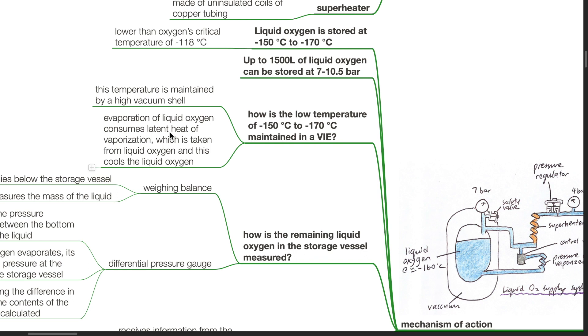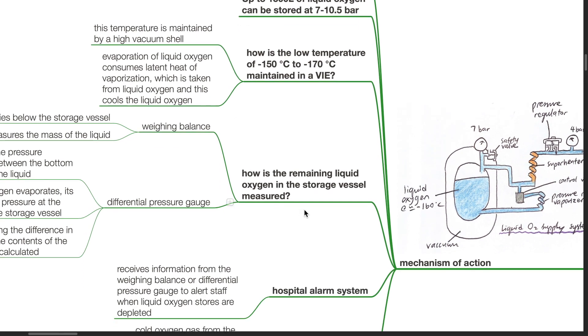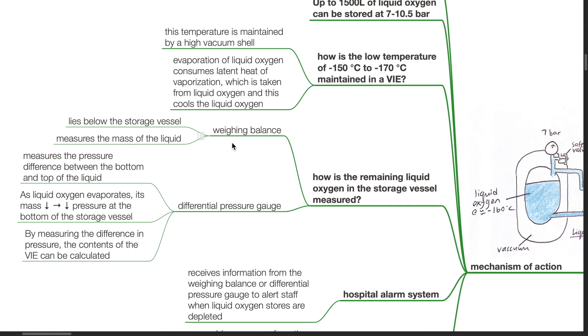How is the remaining liquid oxygen in the storage vessel measured? It is measured by either a weighing balance or differential pressure gauge. The weighing balance lies below the storage vessel and measures the mass of the liquid. A differential pressure gauge measures the pressure difference between the bottom and top of the liquid.